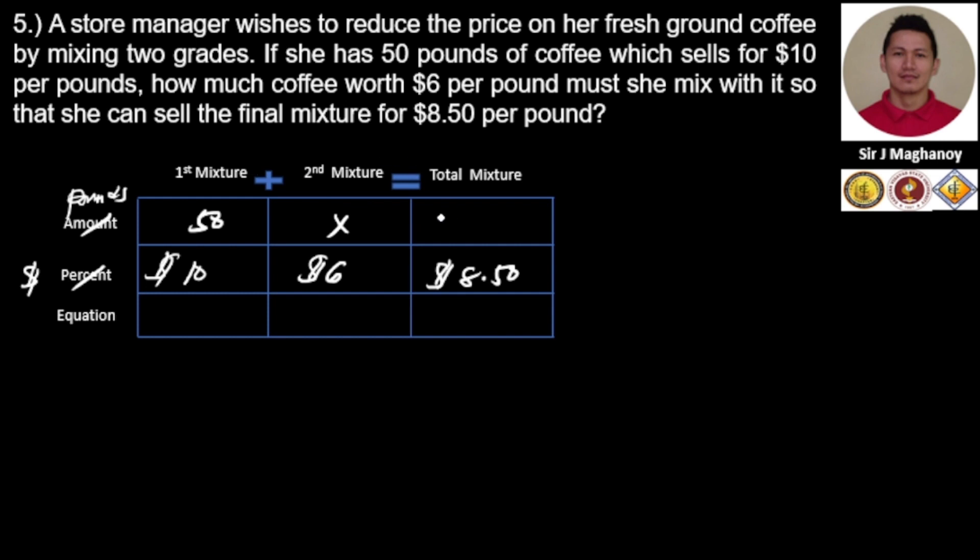We add the mixture: that is 50 plus x. Now we can multiply. So 10 times 50 is 500, plus 6x. And 50 times 8.50, that is 425 plus 8.50x.